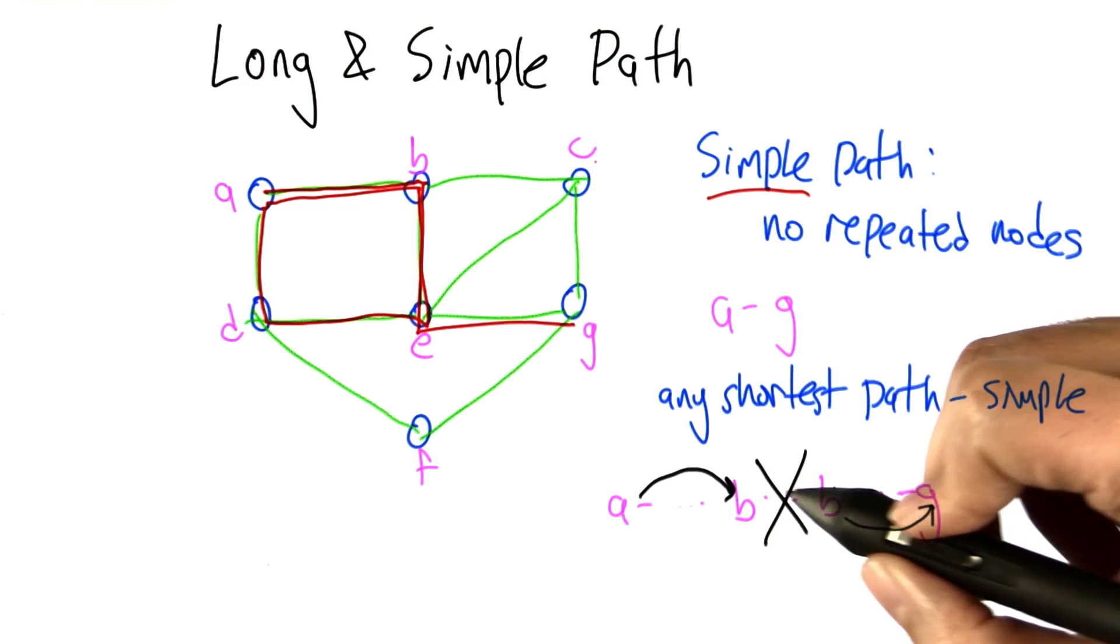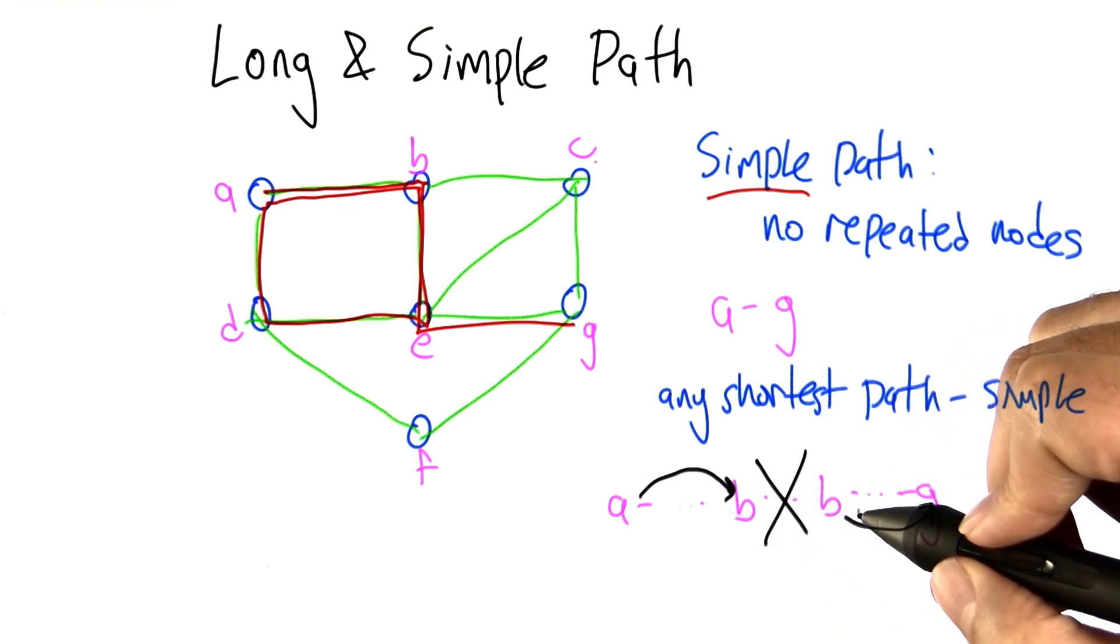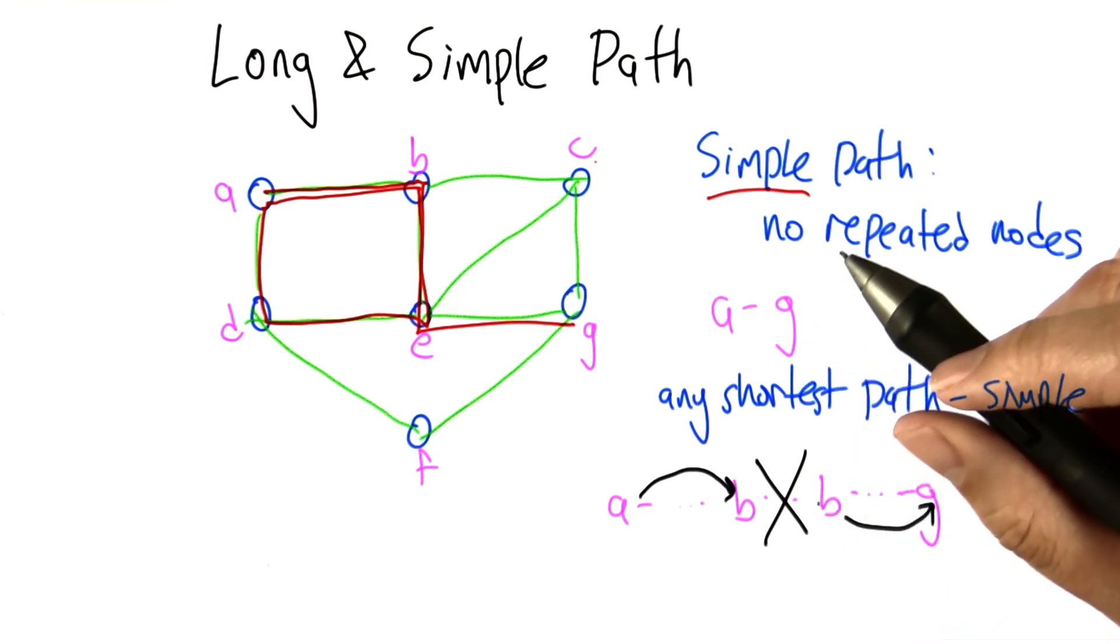So if a shortest path actually had on it a repeat, it was not a simple path, then it can't be a shortest path. There must be a shorter path still. That's a contradiction.